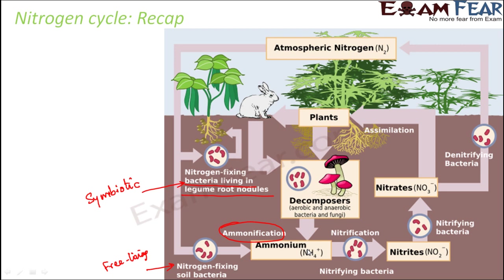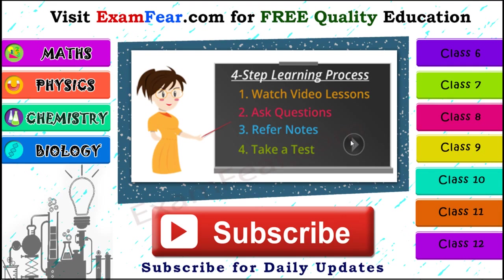In this fashion, all four processes together tell us the nitrogen cycle that is taking place in the ecosystem, just to maintain the balance of atmospheric nitrogen. Thank you. Please visit examfear.com for free quality education. You can learn with a simple 4-step learning process: watch video lessons, ask your questions, refer to notes, and take a free online test. We have content for class 6 to 12 on physics, chemistry, mathematics, and biology, along with practical videos. Please subscribe to our channel for daily updates. Thank you.